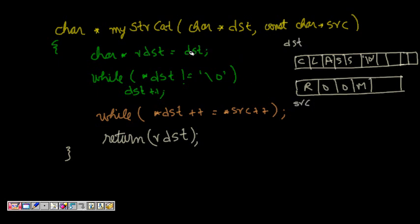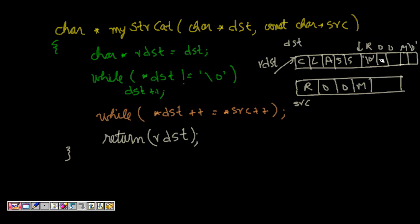What happens is I make a pointer equal to destination, which points to the start. Then, while the character at destination is not equal to '\0' — meaning it's not the end of the destination string — I do destination++. This way I come to the end of the destination string, and then I copy source into the destination, so 'room' will be copied there with a '\0'.